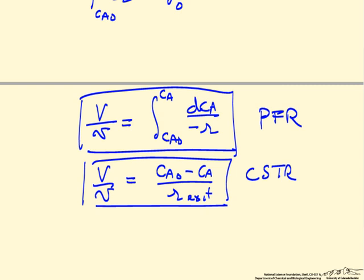I've reproduced the CSTR equation so we can compare, and you'll notice the similarities. Here's a concentration difference and a rate, and the big difference between these two is this rate in the CSTR is at the exit conditions. The rate in the plug flow reactor is continuously changing as we move through the reactor, and that's why we have to do an integration.